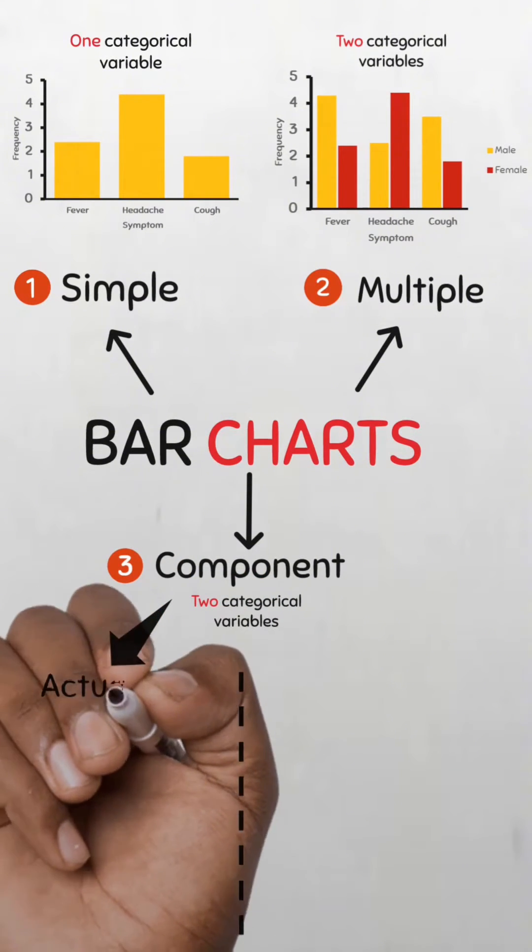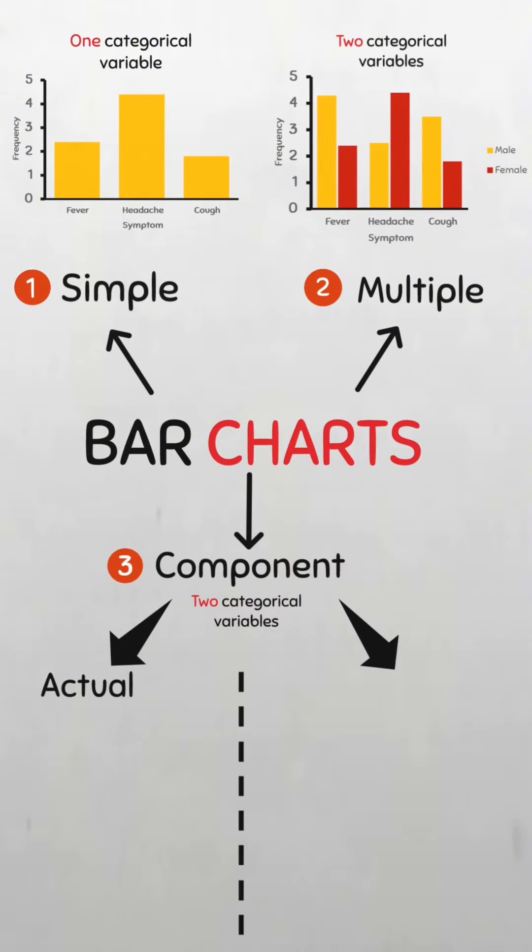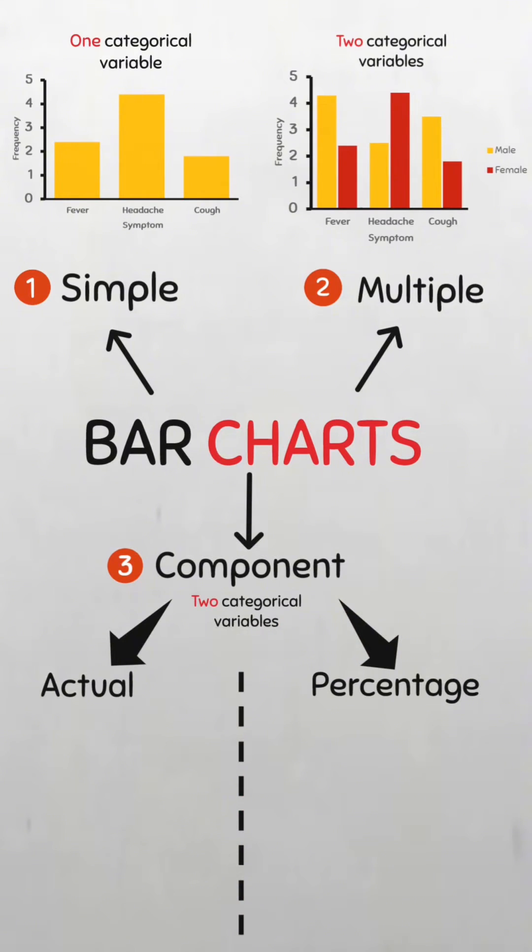The first is called the actual component bar chart, and the second is the percentage component bar chart.